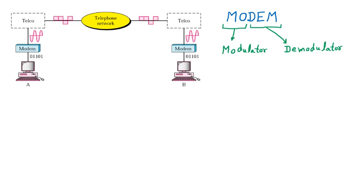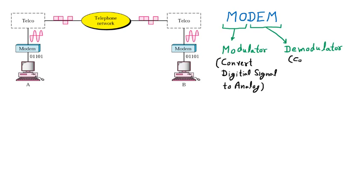Modulation means converting digital signal to analog signal, and demodulation is the reverse — converting analog signal to digital signal. So modem is used for converting analog signals to digital and digital to analog. That conversion is done with the help of the modem.